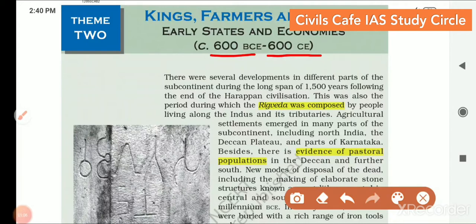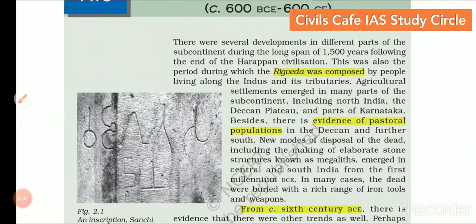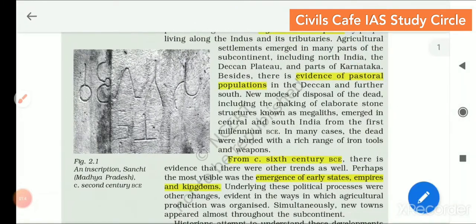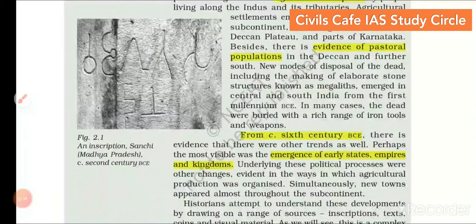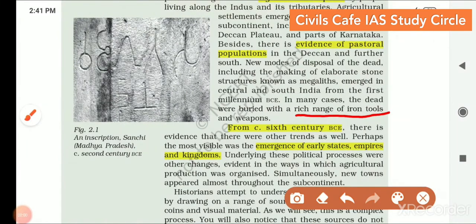The period we are referring to is 600 BCE to 600 CE. There were several developments in different parts of the subcontinent during the long span of 1500 years following the end of the Harappan civilization. The early Vedic age started around 1500 BCE. During this gap, the Rig Veda was composed and we can see evidence of pastoral populations in the Deccan and further south. Then the expansion of agriculture happened and the use of iron came into existence — that was an important technological change. Before that, what we had was the Bronze Age. Now the Iron Age of Indian history emerged.